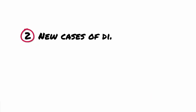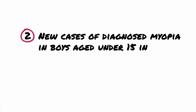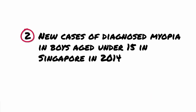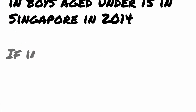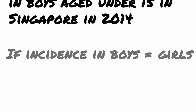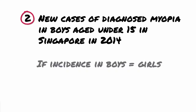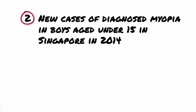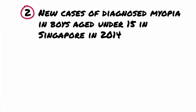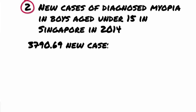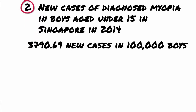Example 2. How many new cases were registered for boys aged under 15 in Singapore in 2014 if the incidence of myopia was the same for boys as for girls? Here, the calculation is done the other way round to the previous one. We know that there were 3,790.69 new cases per 100,000 boys.